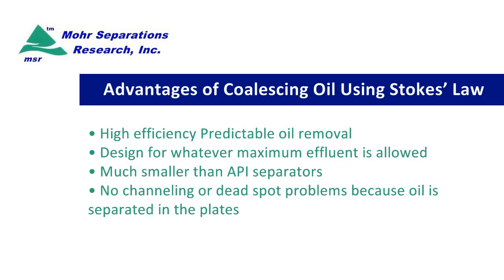We can design for whatever the maximum effluent is allowed. The requirement in the United States is usually that it meet the rules of the Clean Water Act, which is generally considered to be 15 milligrams per liter in the effluent, and that's certainly achievable with coalescing plates. Coalescing plate type separators are much smaller than API separators because they don't have to have the large residence time that API separators require.